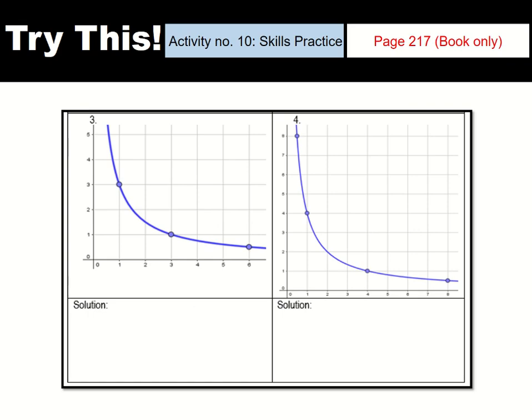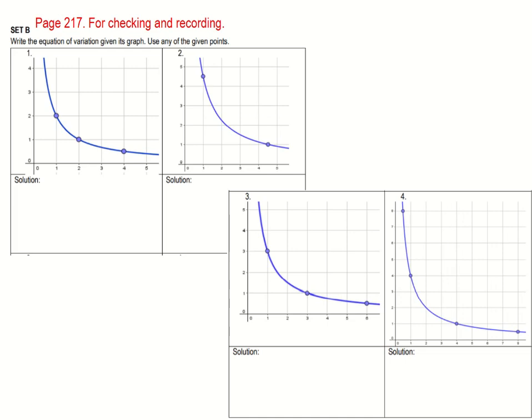It's time for you to practice on page 217 of your book, activity number 10. I'll give you a minute to do it because it's very easy. This is not anymore practice. This will be recorded rather. For checking and recording, we have page 217. Don't forget to upload this one or pass it to me during Saturday.